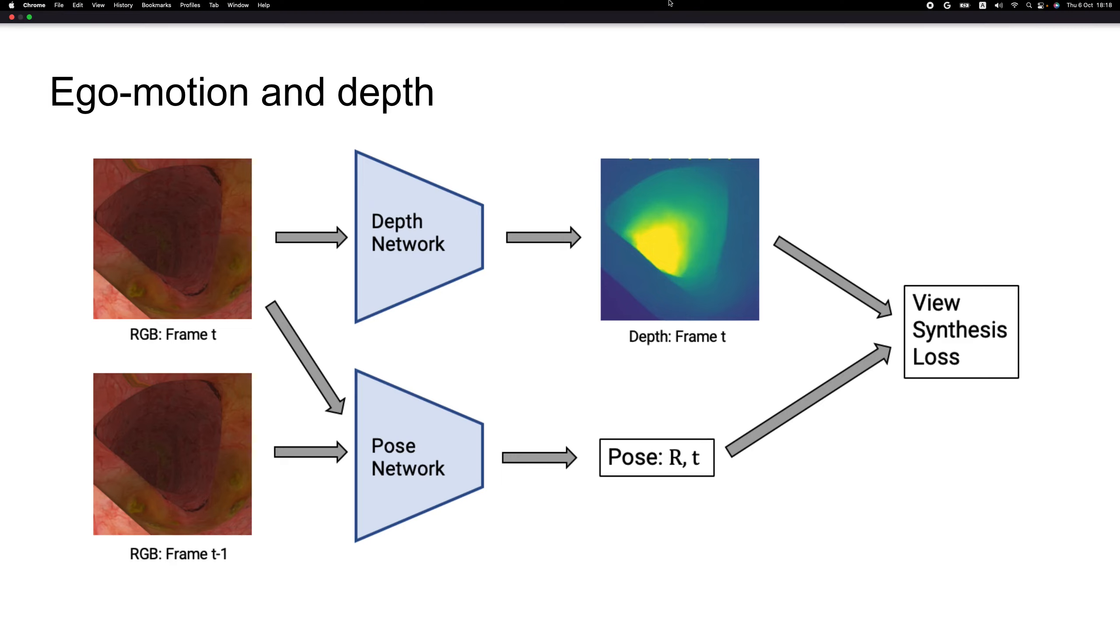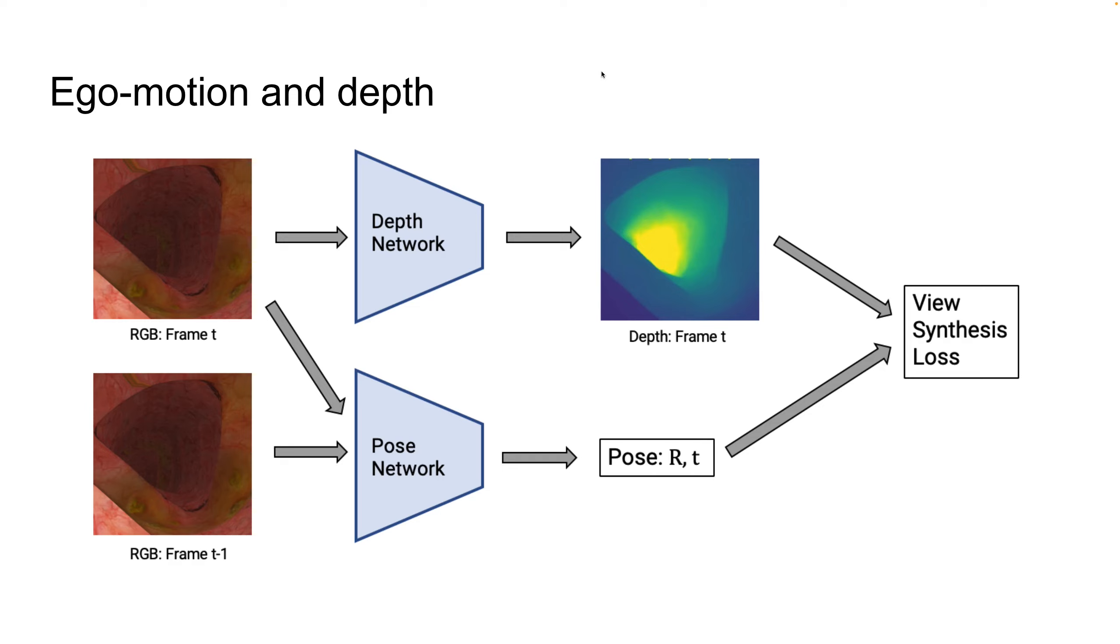Let's dive into which features are really important. From two consecutive RGB frames we generate, through a pose network and a depth network, we generate a depth map for the image and an egomotion estimate. So from here we know if a frame moves forward or backwards.